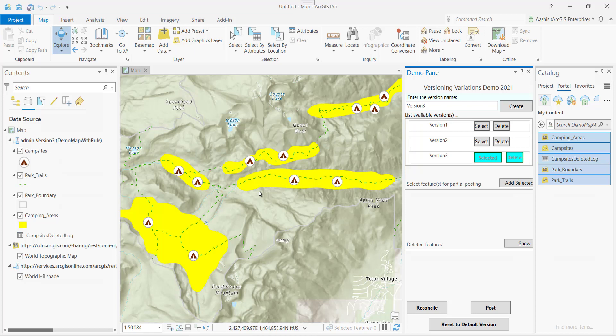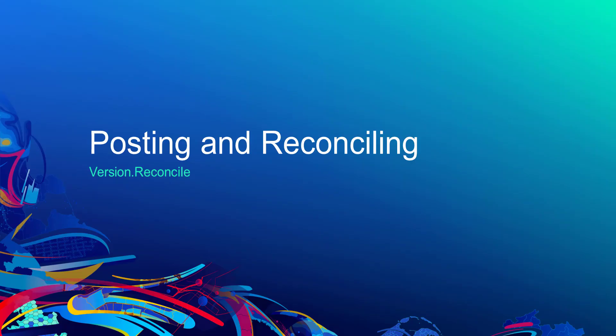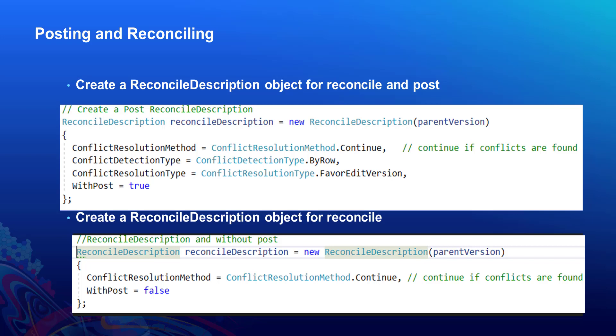Now let's switch gear towards updating data in a version and transferring the changes from local version to default version, and also pulling data from default version to local version using posting and reconciling. Post is a technique to transfer your local changes to the default version, and reconcile is a technique to pull updates from default version to local version. The default version is the root version, which is the parent of all other versions. You maintain and update the default version by posting changes to it from each child version. For both posting and reconciling, we define the reconcile description object, which defines ways to handle conflict detection, conflict resolution, and post.